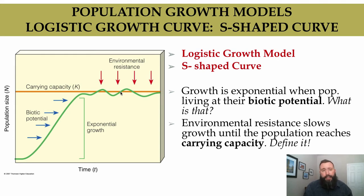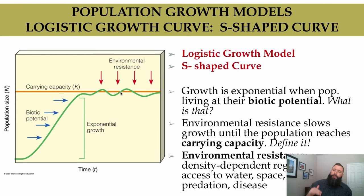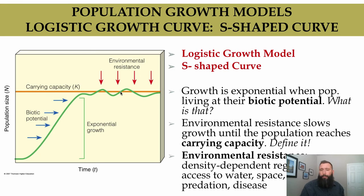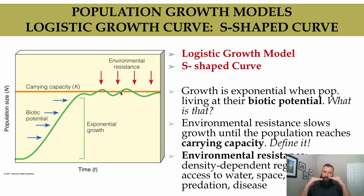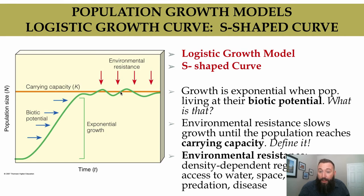Carrying capacity is the number of organisms that an ecosystem can support without environmental degradation. That environmental resistance comes from density-dependent regulation — access to limiting resources like water, space, habitat, food, and nutrients, as well as predation, competition, disease, parasites, and waste accumulation. These are what control and slow down that growth rate.